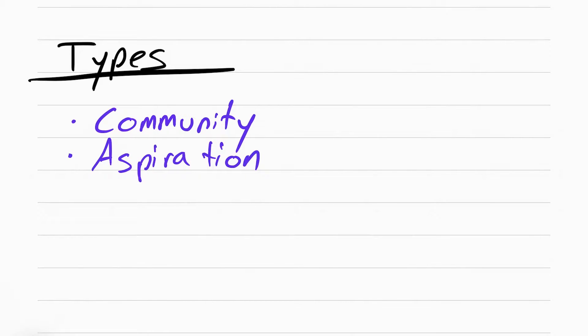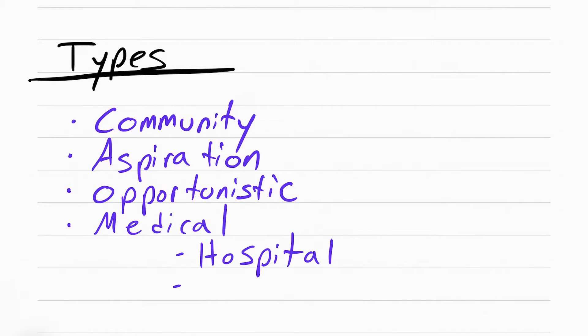There are different types of pneumonias: community acquired pneumonia, which is usually not too bad; aspiration pneumonia when someone inhales something; opportunistic pneumonia when someone's immunosuppressed like with chemo and AIDS; and medical care associated pneumonia, which includes hospital acquired pneumonia and ventilator associated pneumonia, meaning they're on a ventilator with a tube down their throat and they get pneumonia because of it.